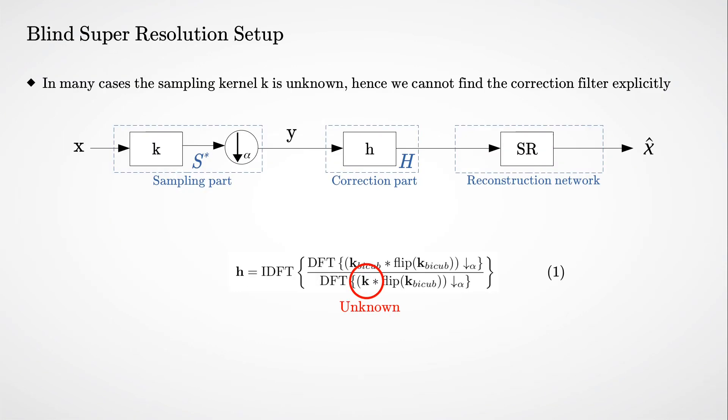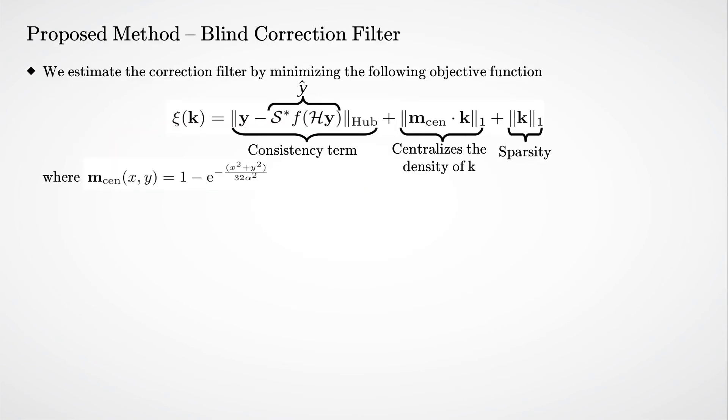In many cases, the sampling kernel K is unknown, and therefore we cannot use the analytic expression of the correction filter H. Therefore, we present an algorithm for estimating the correction filter when K is unknown.